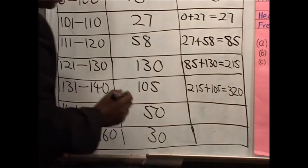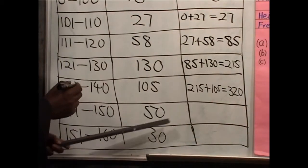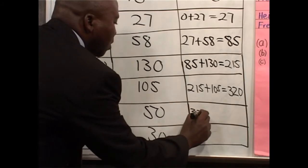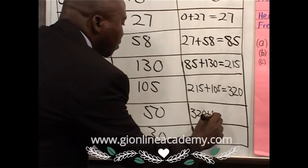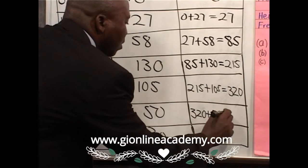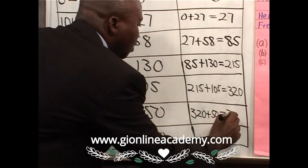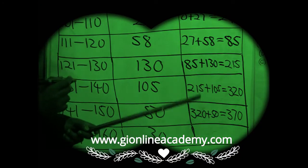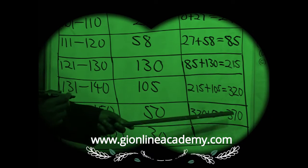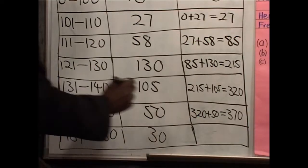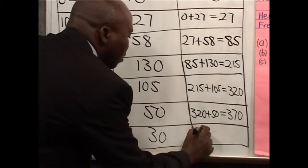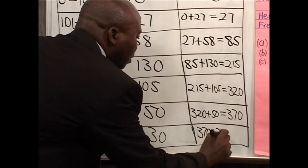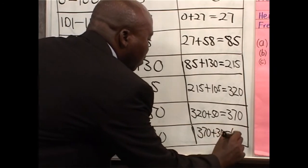Again, the same. 320 plus 50. 320 plus 50. This would give you 370. The last: 370 plus 30. 370 plus 30. You get 400.